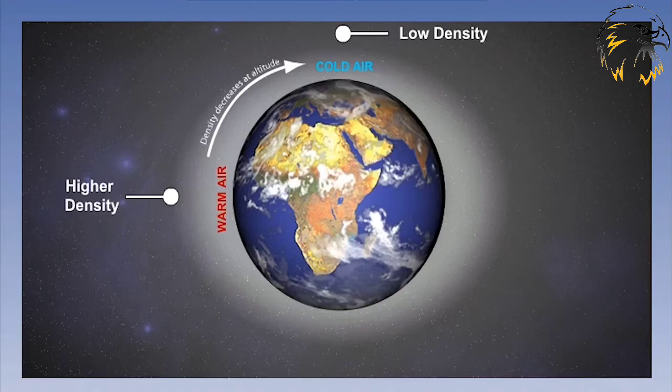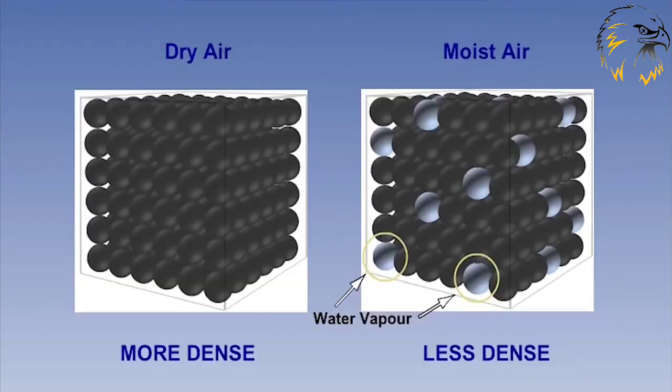There is one more variable that can alter the density of air. This variable is water vapor. The effect is complicated and beyond the scope of the expected level of knowledge needed. It's sufficient just to know that the density of water vapor is less than dry air, such that if a parcel of air was to contain water vapor, the density would be less than that of a parcel of dry air.